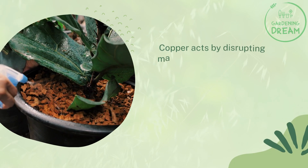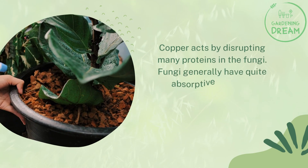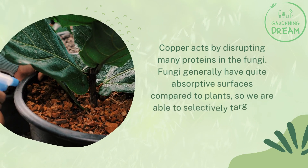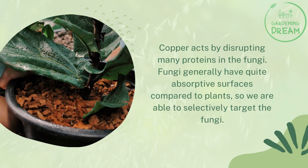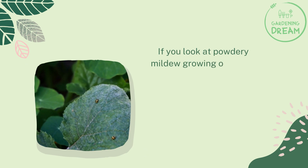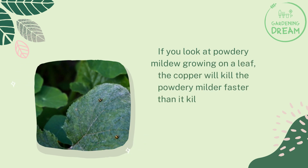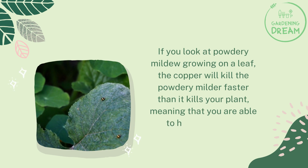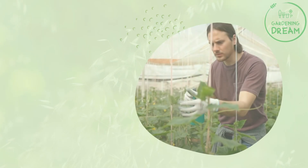Copper acts by disrupting many proteins in the fungi. Fungi generally have quite absorptive surfaces compared to plants, so we are able to selectively target the fungi. If you look at powdery mildew growing on a leaf, the copper will kill the powdery mildew faster than it kills your plant, meaning that you are able to help your plant.